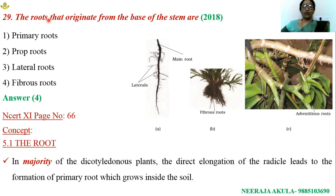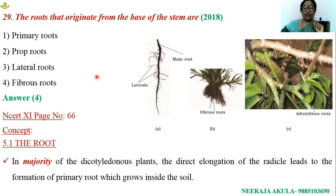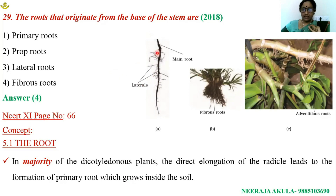Question number 29: the roots that originate from the base of the stem are — primary roots, prop roots, lateral roots, or fibrous roots? The answer is fibrous roots. In most dicotyledons, root arises from the radicle and leads to a primary root which grows into the soil, forming several secondary roots — this is known as the tap root system, associated with several lateral roots.